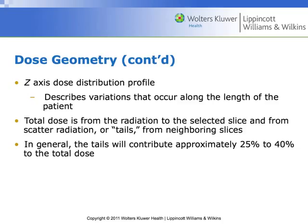The total dose is further complicated by the fact that there are scatter events going on, so the dose tails off from one slice and overlaps into the next slice. In general, these tails can account for 25% to 40% of the total dose. This tailing effect of scattering as we move across the patient's body is generating close to half the dose — and it's non-diagnostic.